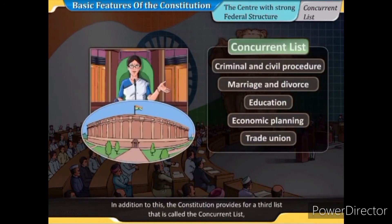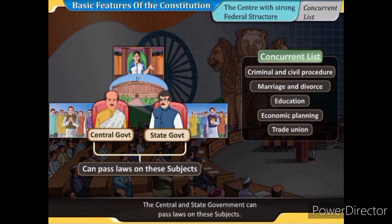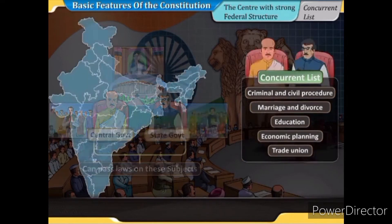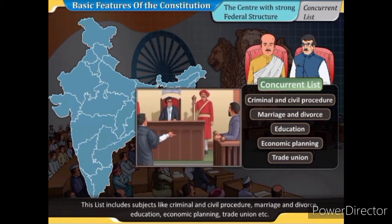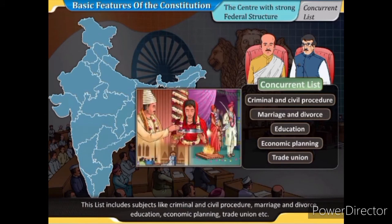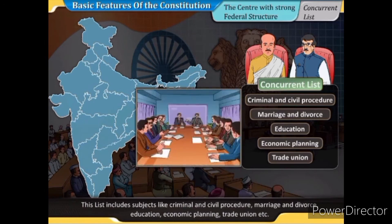In addition, the Constitution provides for a third list called the Concurrent List, which consists of subjects of common concern to both the centre and state governments. Both can pass laws on these subjects. The Concurrent List has 47 subjects, including criminal and civil procedure, marriage and divorce, education, economic planning, trade unions, etc.